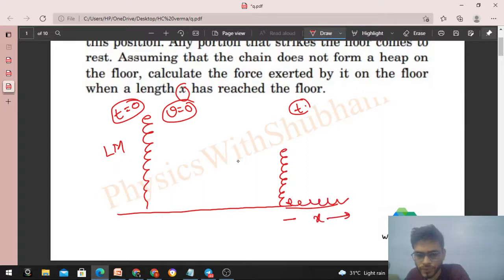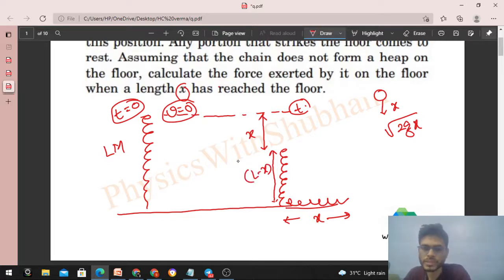So kya is next time pe aap ye joh vertical part hai chain ka, iska speed nikal sakti ho? Aap dhekho joh vertical part hai na chain ka, usne kitna length travel kiya hai? x length upar se. So koi bhi object agar free fall karta hua x length niche aayega to uska speed kitna ho jayega? Under root 2gx. So is time pe ye joh L minus x length hai chain ka, woh travel kar raha hai with under root 2gx.